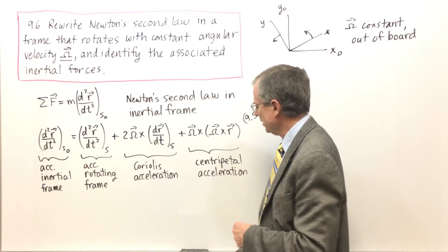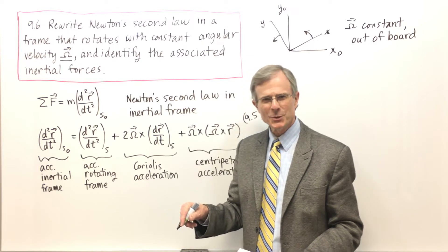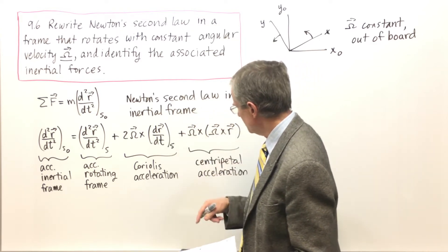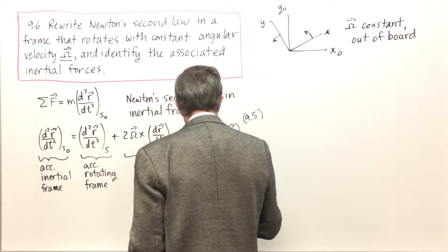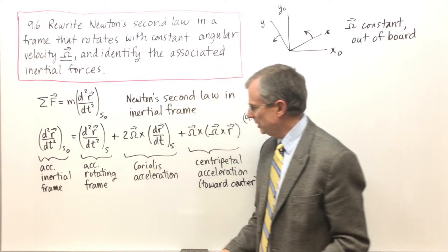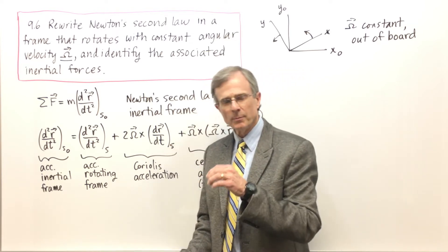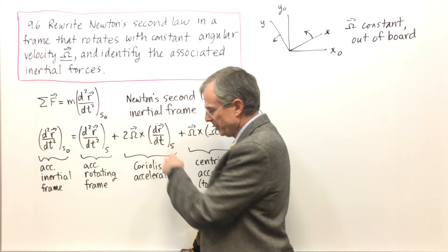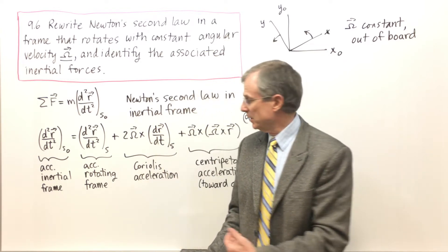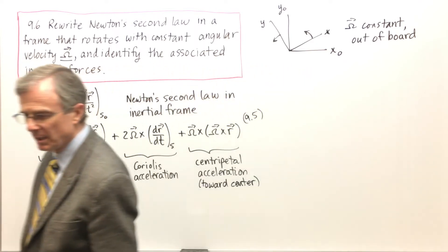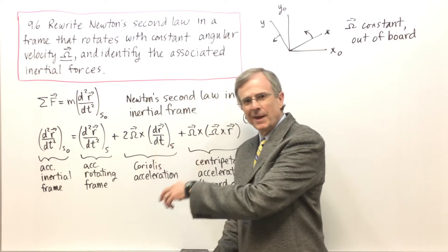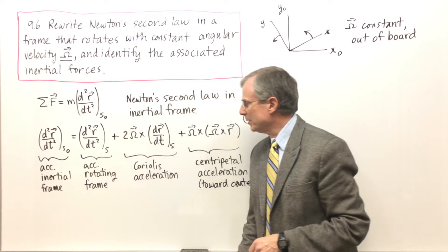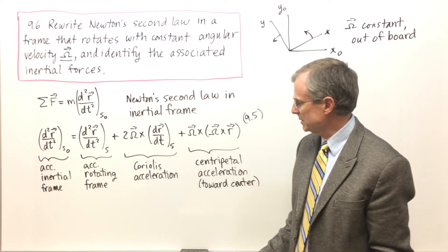This one is called the centripetal acceleration — it points in toward the center of the circle, which is the centripetal acceleration you know and love, expressed here in vector form. This other new component of acceleration disappeared in the uniform circular motion case, but it's extremely important for motion on the surface of the Earth. Right now my velocity in the rotating frame is zero, but as soon as I start walking on the surface of the Earth I have a velocity as seen by the rotating observer, and that leads to really weird forces on merry-go-rounds, etc.